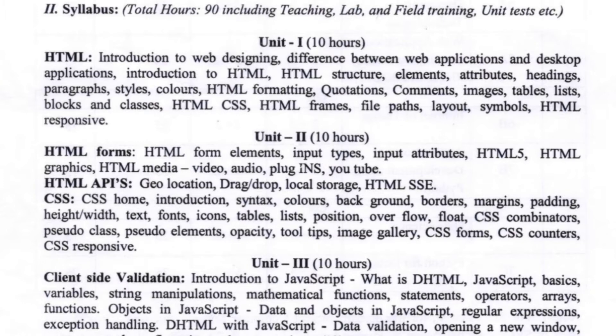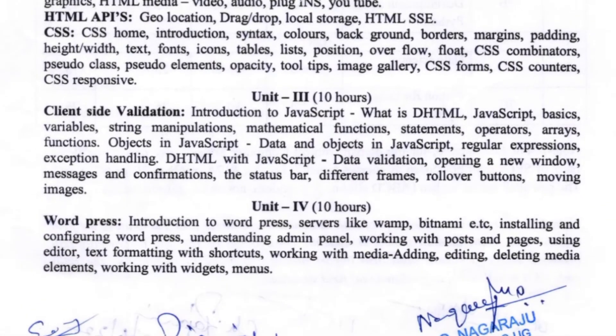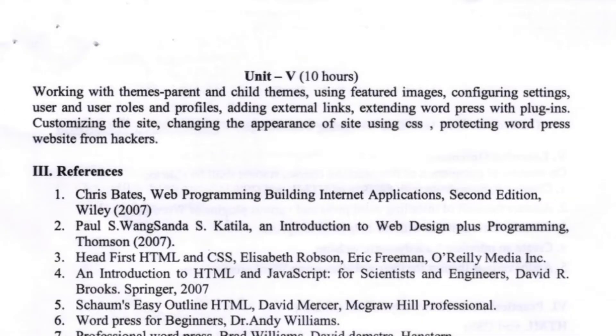In Unit 3, there is client-side validation. Unit 4 is WordPress. Unit 5 is working with themes.